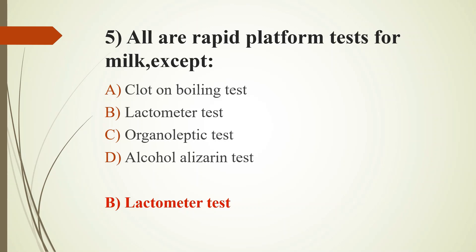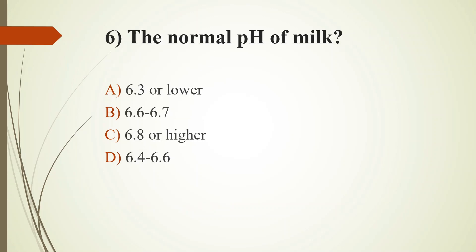Sixth question: The normal pH of milk — Option A: 6.3 or lower; Option B: 6.6 to 6.7; Option C: 6.8 or higher; Option D: 6.4 to 6.6. The answer is Option B: 6.6 to 6.7. If the milk is acidic, its pH will be 6.3 or lower. If the milk is alkaline, its pH will be 6.8 or higher. If the milk is slightly acidic, the pH will be 6.4 to 6.6.